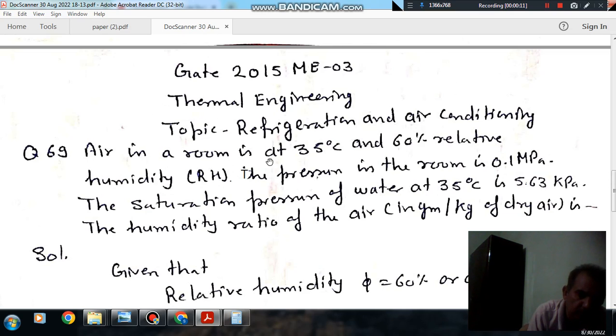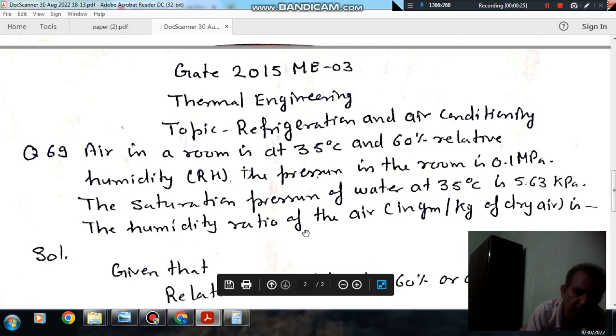Air in a room is at 35 degrees Celsius and 60% relative humidity. The pressure in the room is 0.1 MPa. The saturation pressure of water at 35 degrees Celsius is 5.63 kPa. The humidity ratio of dry air in grams per kilogram of dry air is to be found.